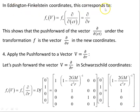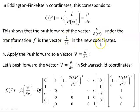In Eddington-Finkelstein coordinates, this corresponds to f★(v) = ∂/∂v. This shows that the push forward of the vector ∂/∂(ct) under the transformation f is the vector ∂/∂v in the new coordinates. Because in the new coordinates we have v, r, θ, φ — the time coordinate in Schwarzschild becomes v in Eddington-Finkelstein, which, as we know, contains both time and radial coordinates mixed together.